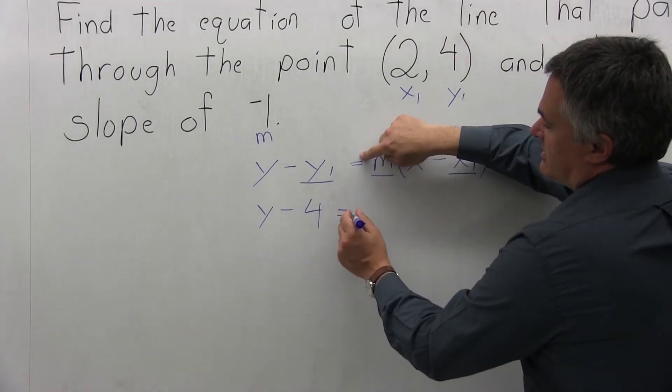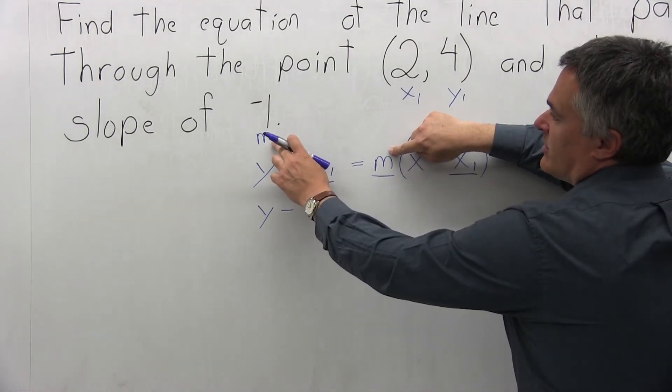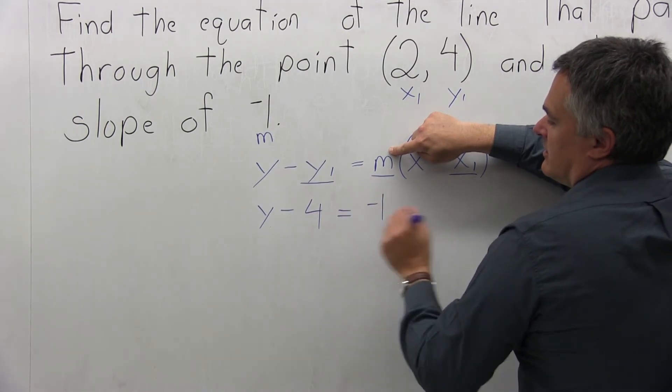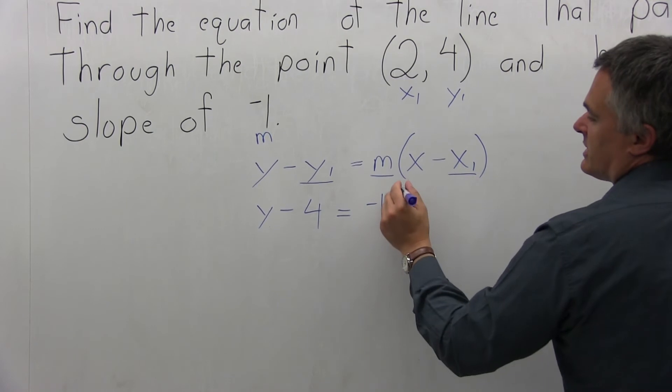Then m. So again, the value of m from the information given in the question is negative 1. And don't lose the negative, pay attention to the negative. Then I'll stop my parentheses.